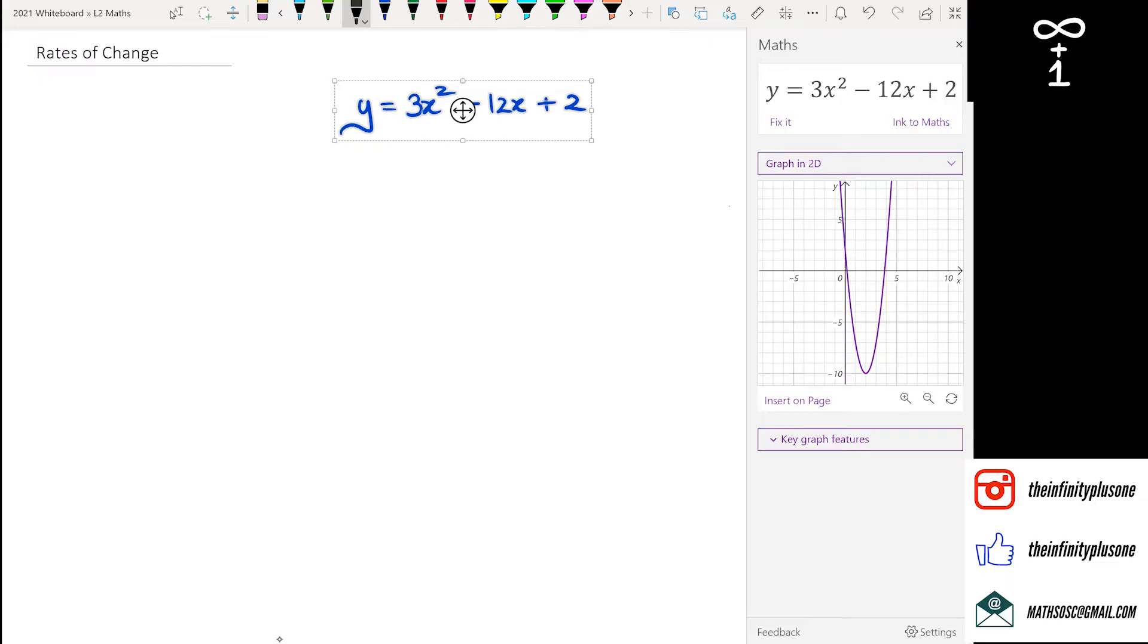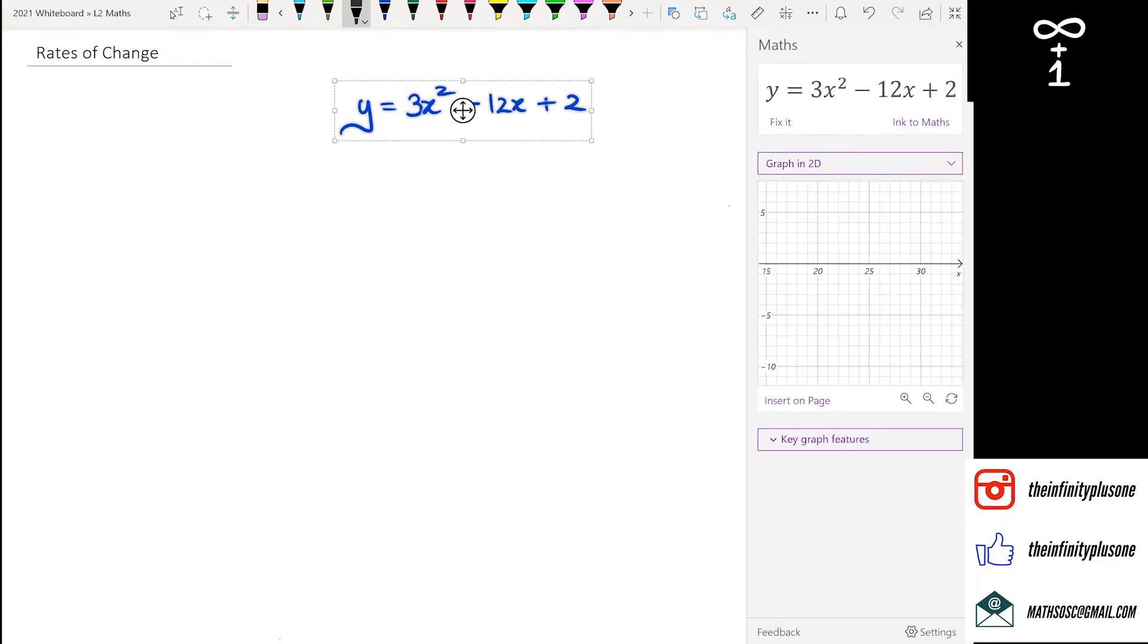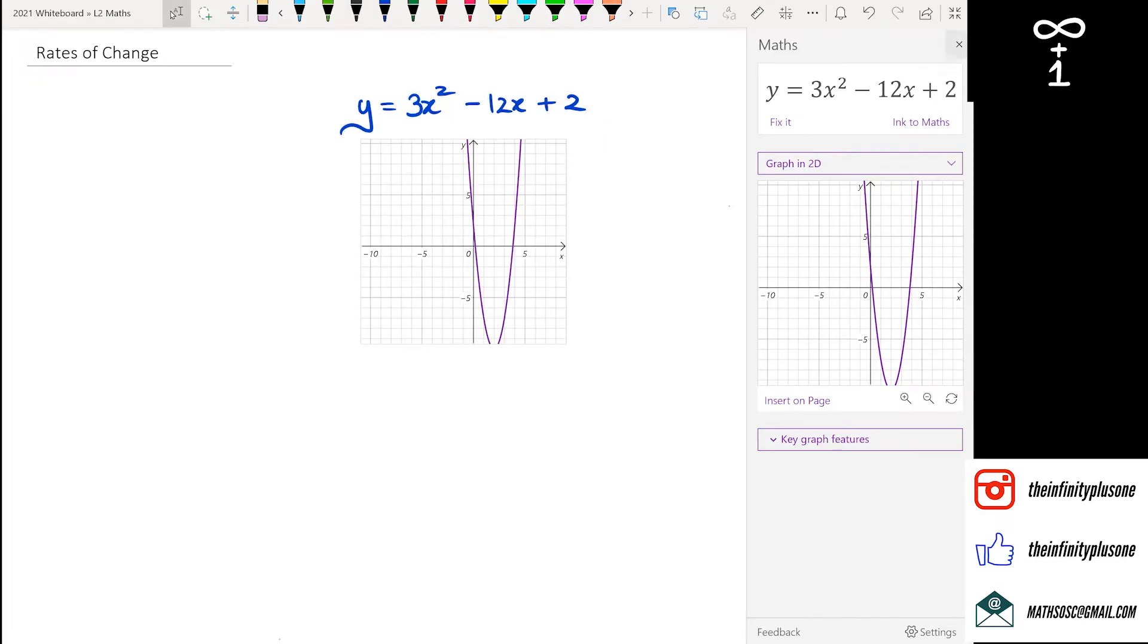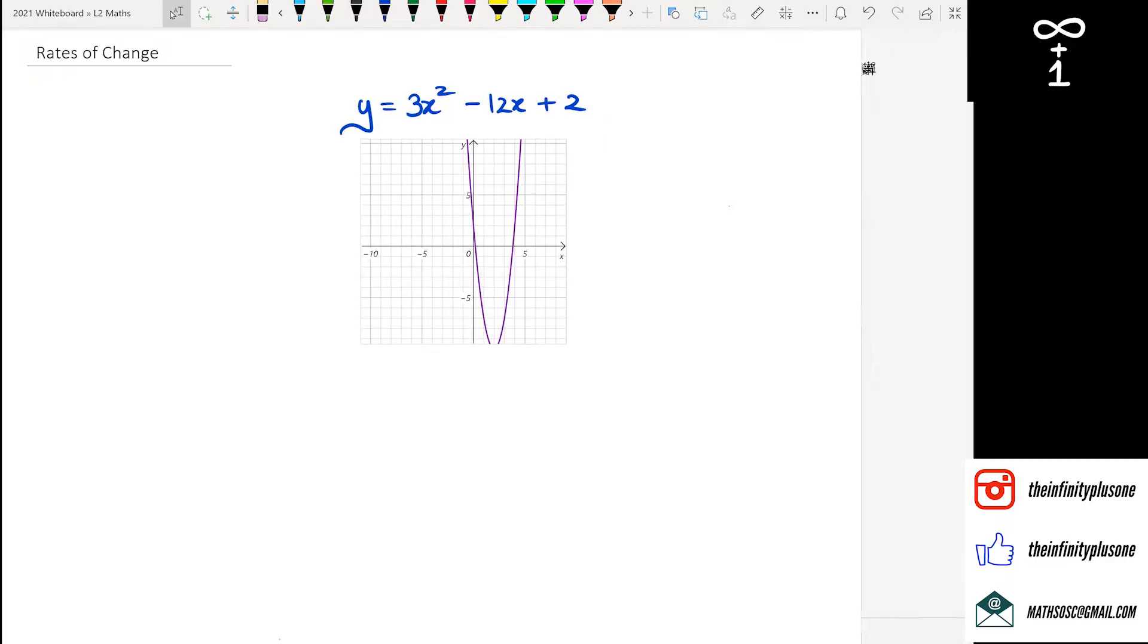Graph in 2D, there we go. I want to insert that on page. So what rates of change really is, is looking at what's happening to the gradient at any given point. So if I want to know what's the rate of change for this graph at a particular point, I could actually ask that.